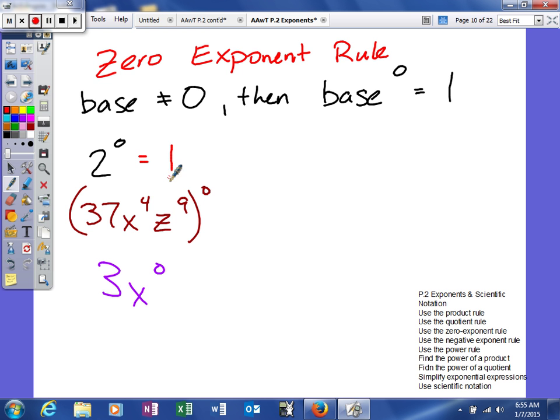So, here we have 37x to the fourth, z to the ninth, all raised to the zero power. That is also equivalent to one, as long as x and z are not equal to zero.